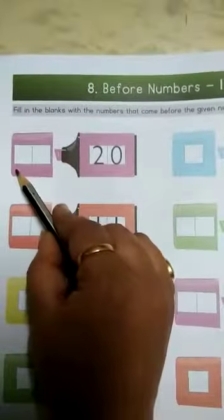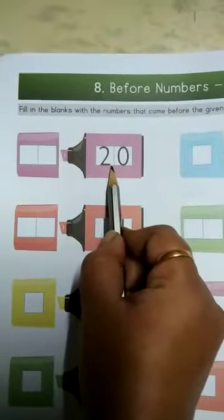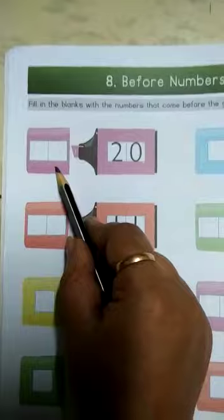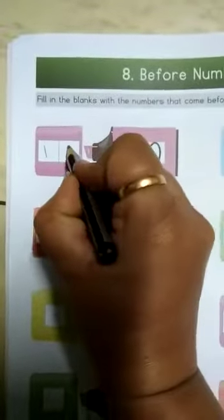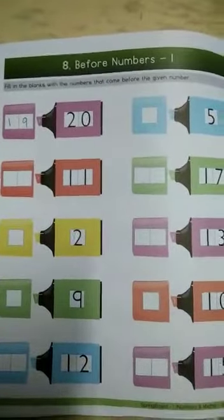Manje delay la number cha adhi sa number to mala it's aahe. Now here there is 20 number. Which number comes before 20? 19. Okay, like this you have to do this. Complete this, take a snap, and send it to me on WhatsApp.